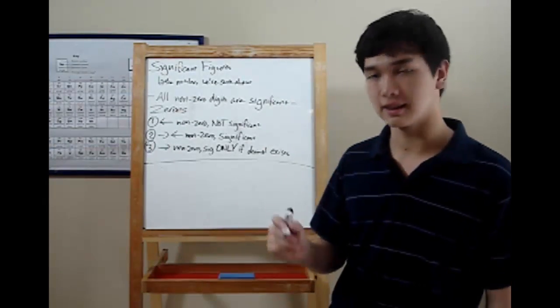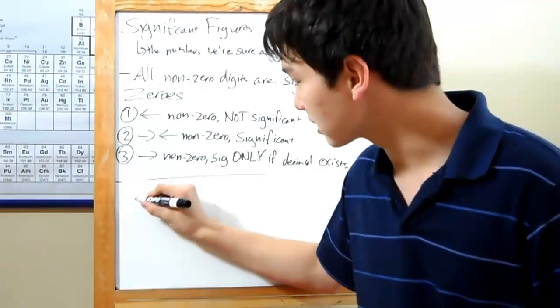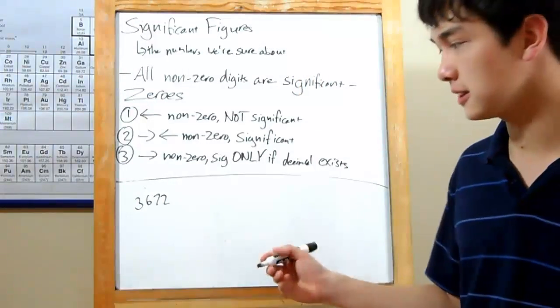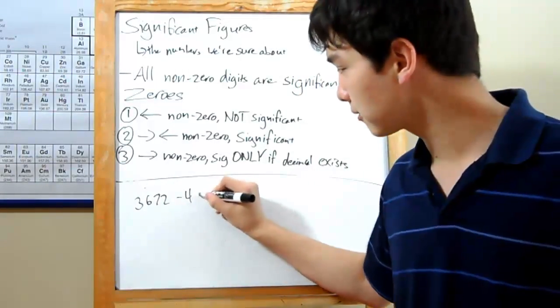First off, all non-zero digits are significant. So, say in the number 3672, none of those digits is a zero. So they're all significant, four sig figs.